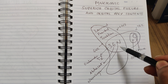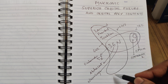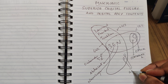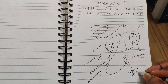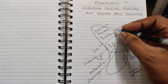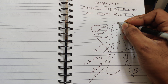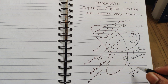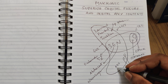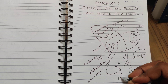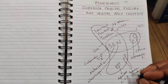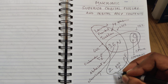Coming to the inferior orbital fissure: it contains the inferior ophthalmic vein. The superior orbital fissure contains the superior ophthalmic vein. The other contents of the inferior orbital fissure are the infraorbital nerve, infraorbital vein, infraorbital artery, and one more important structure — the zygomatic nerve.